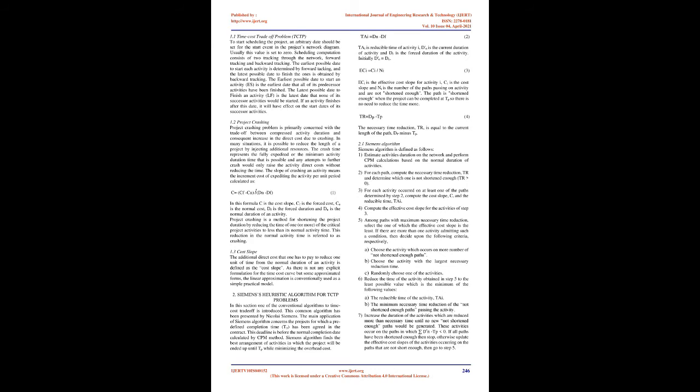FIG 1 illustrates the basic relationships between indirect, direct, and total project cost due to crashing. The paper is organized as follows: in the next section we briefly define the deterministic time-cost trade-off problem, then relevant research and performance is carried out manually with an empirical example, and the CPM of the related example is found using Oracle Primavera P6. To start scheduling the project, an arbitrary date should be set for the start event in the project's network diagram, usually set to zero. Scheduling computation consists of two passes through the network: forward tracking and backward tracking. The earliest possible date to start each activity is determined by forward tracking, and the latest possible date to finish is obtained by backward tracking.